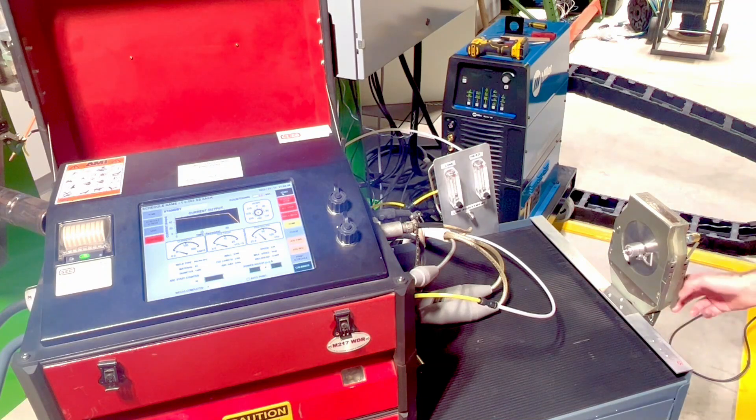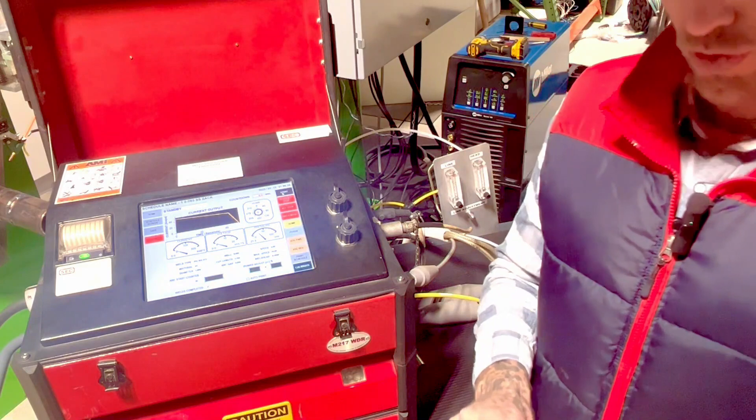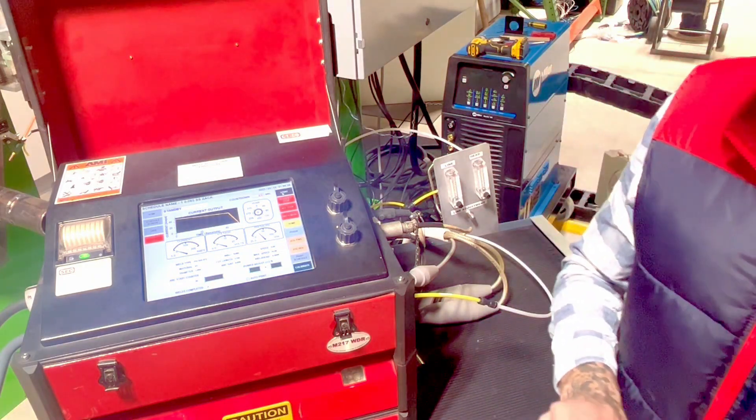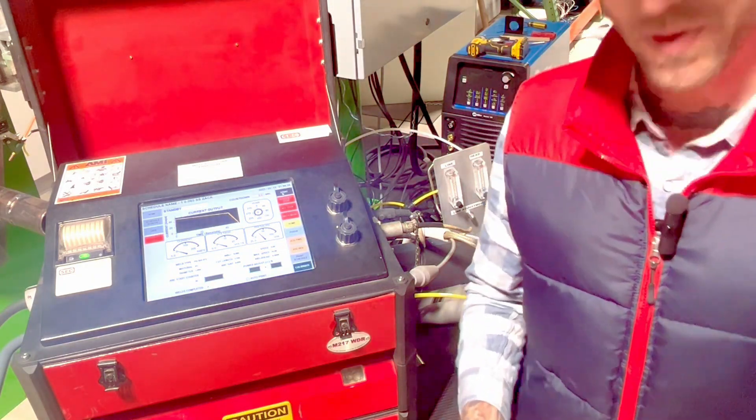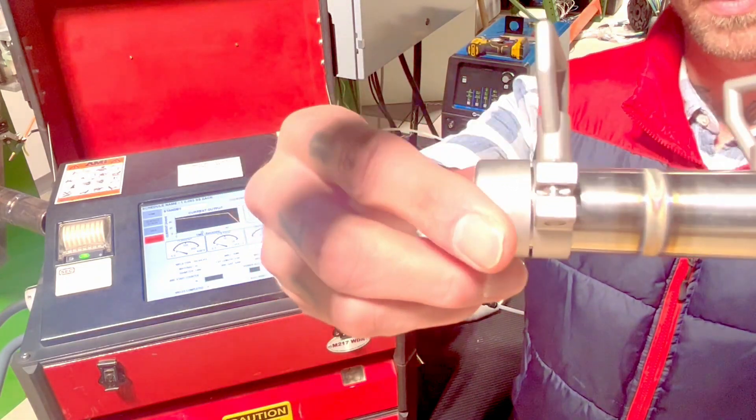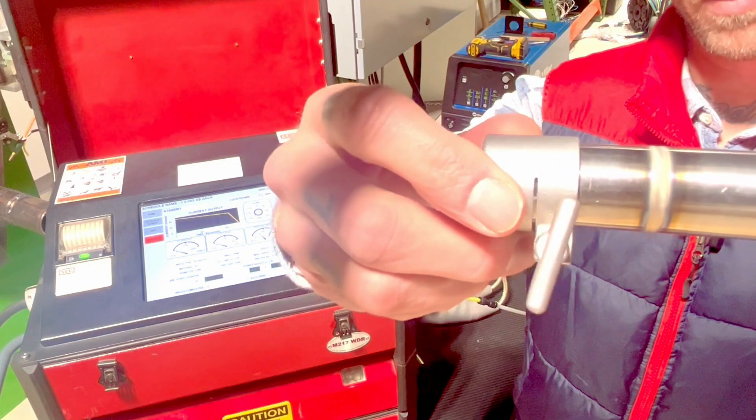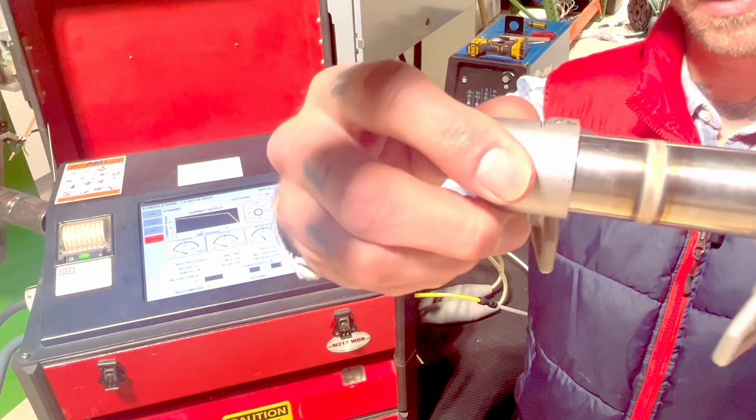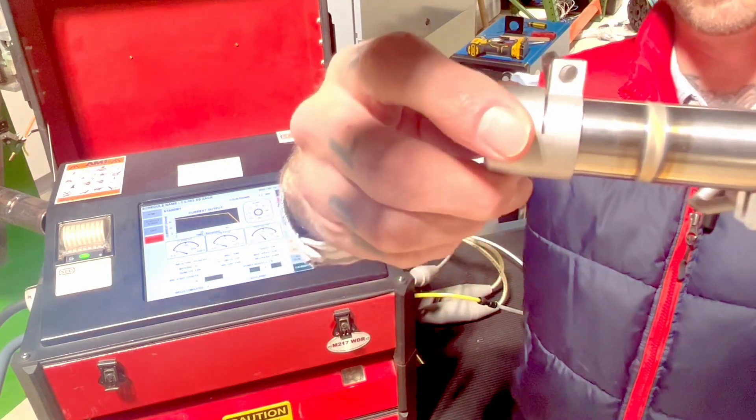Now, let's check this weld out. You're going to want to be careful because it's certainly going to be hot if you're testing coupons, but this is with Autopulse S3. We have a good clean weld performed by the AMI 217 and the 84000 closed fusion weld head.